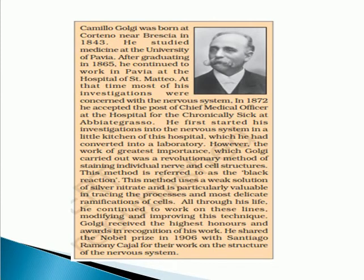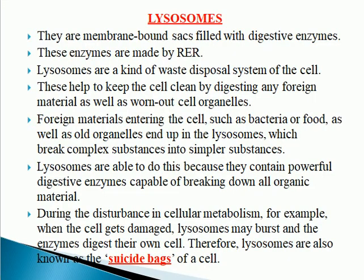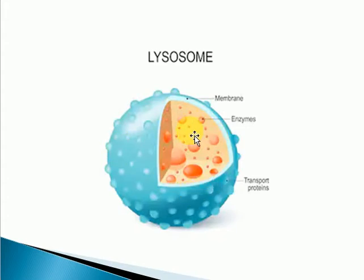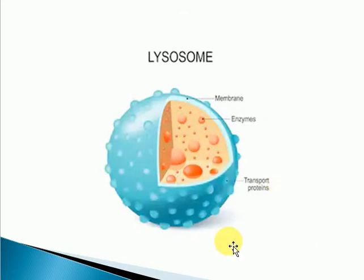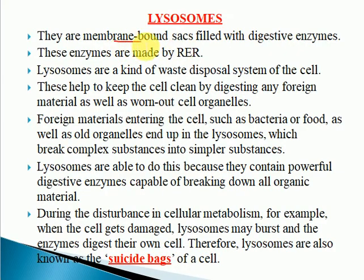The next cell organelle is the lysosome. What exactly is a lysosome? It is a small cell organelle which has digestive enzymes present inside it. These enzymes help either in the digestion of certain food particles, in breaking down of certain bacteria, or when the cell gets old, they help in the digestion of the cell itself. That is why it is referred to as the suicidal bags. They are membrane-bound and contain digestive enzymes, which are made by the rough endoplasmic reticulum.